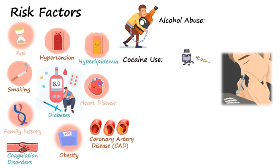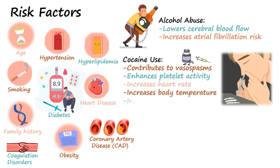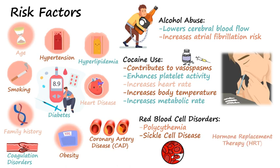Alcohol lowers cerebral blood flow and increases atrial fibrillation risk. Cocaine use contributes to vasospasms, enhances platelet activity, increases heart rate, increases body temperature, and increases metabolic rate. Red blood cell disorders like polycythemia and sickle cell disease also increase the risk due to red blood cells blocking capillary beds perfusing the brain. Hormone replacement therapy for women can increase the risk for stroke because estrogen is known to stimulate the liver to increase clotting factor production, making it more likely for a clot to form.